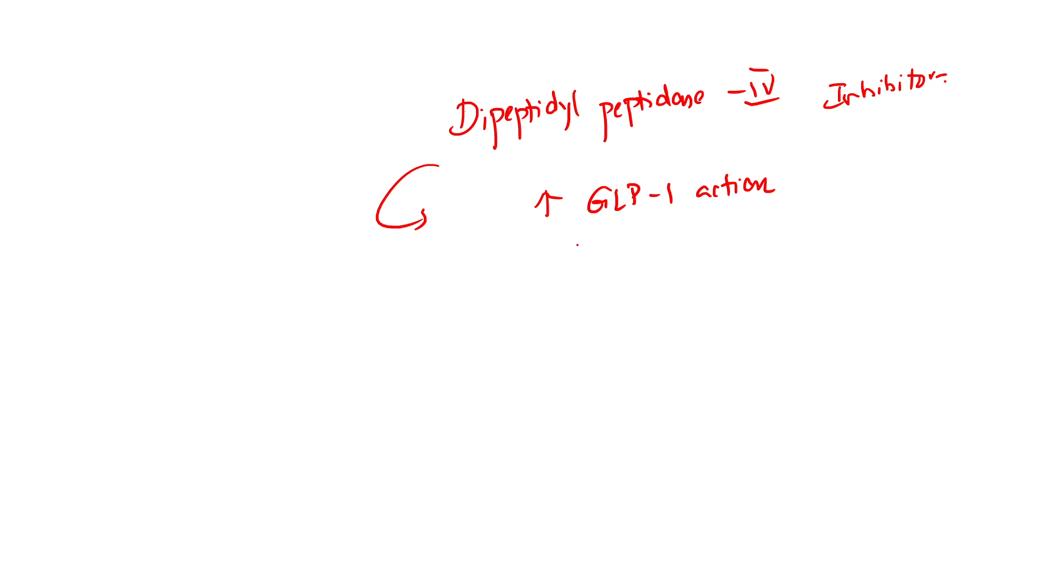What is the action of these inhibitors? They cause increased GLP-1 action. What is GLP-1? This is glucagon-like peptide. Remember, glucagon and insulin have a very weird kind of relationship.